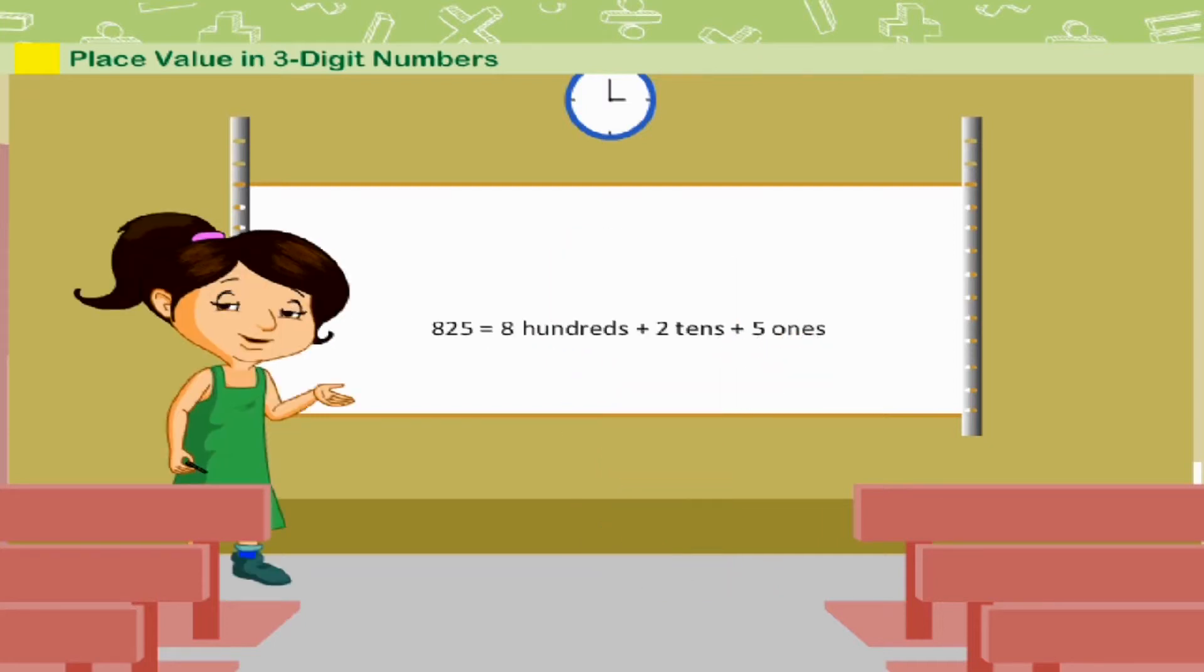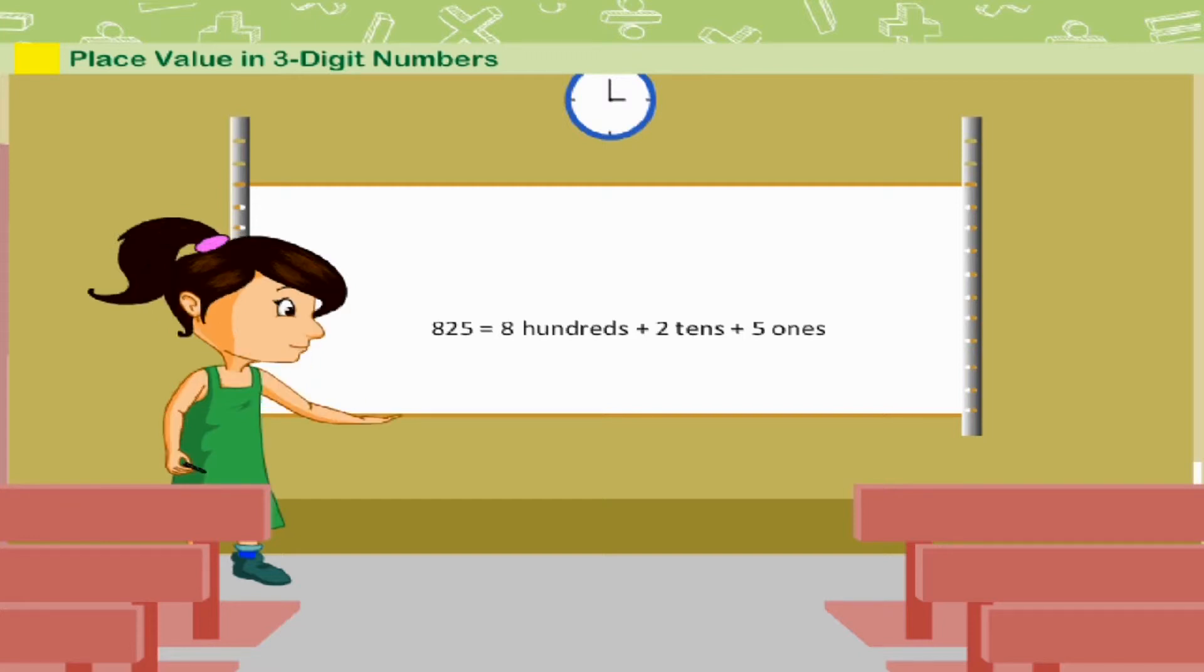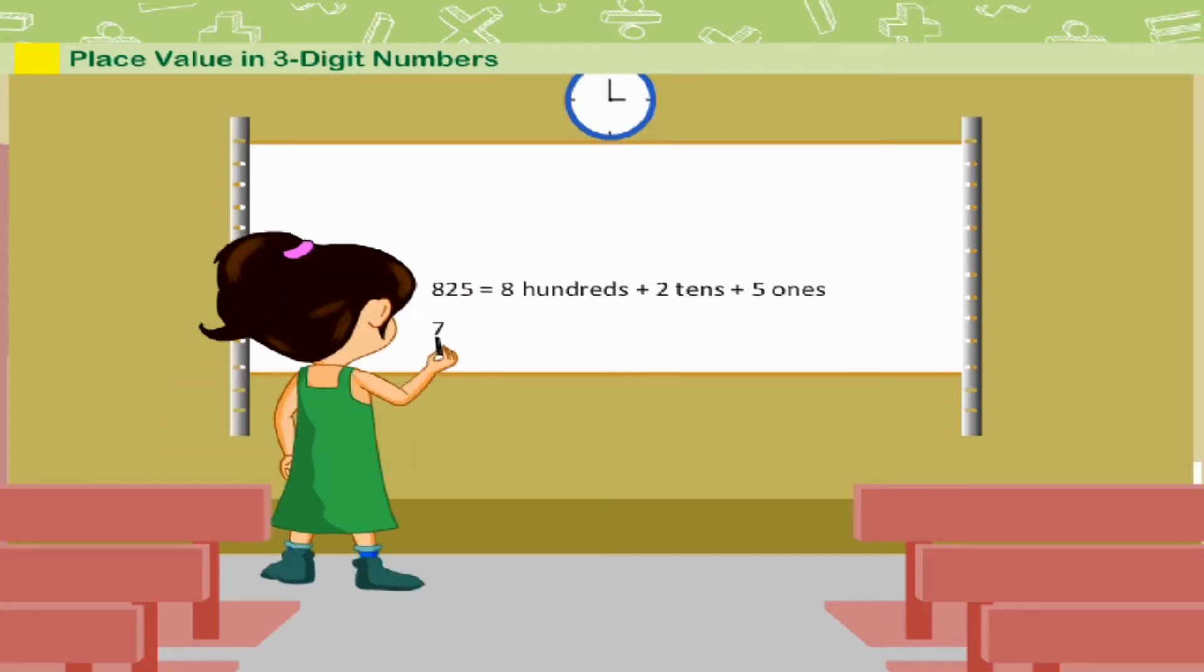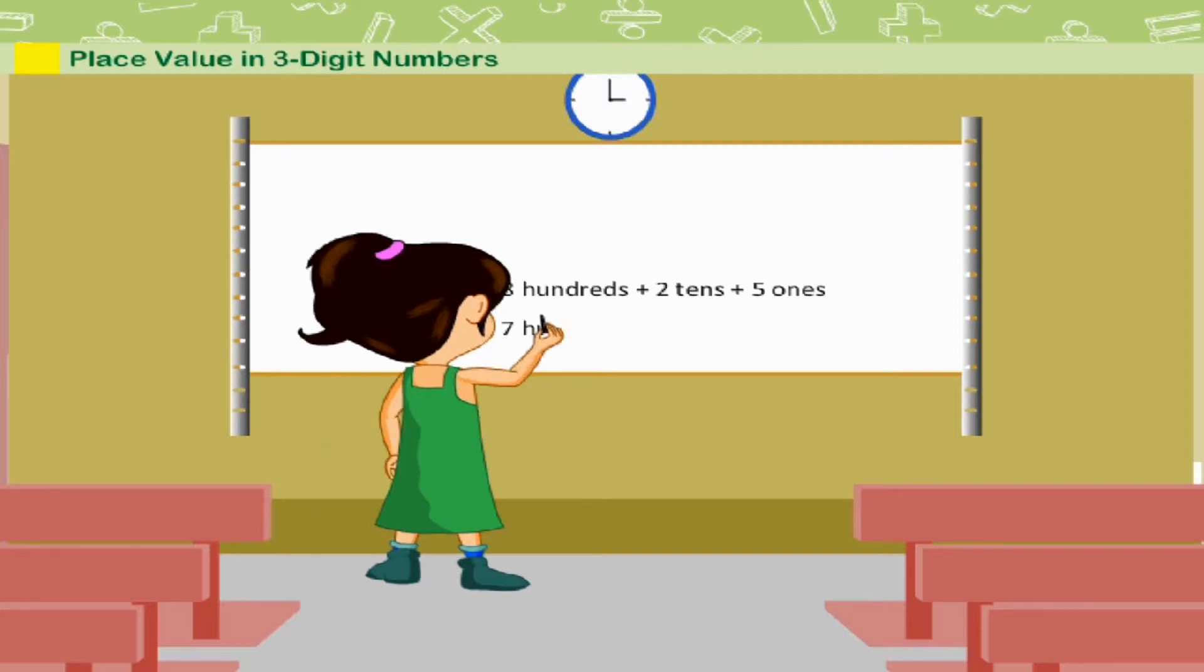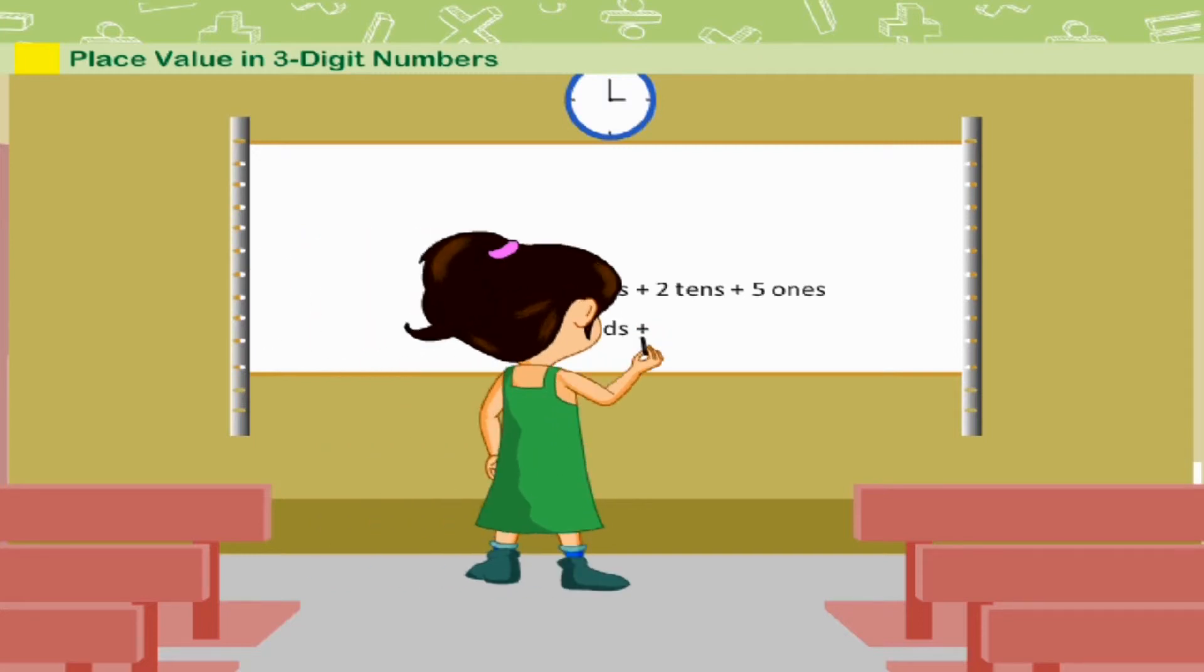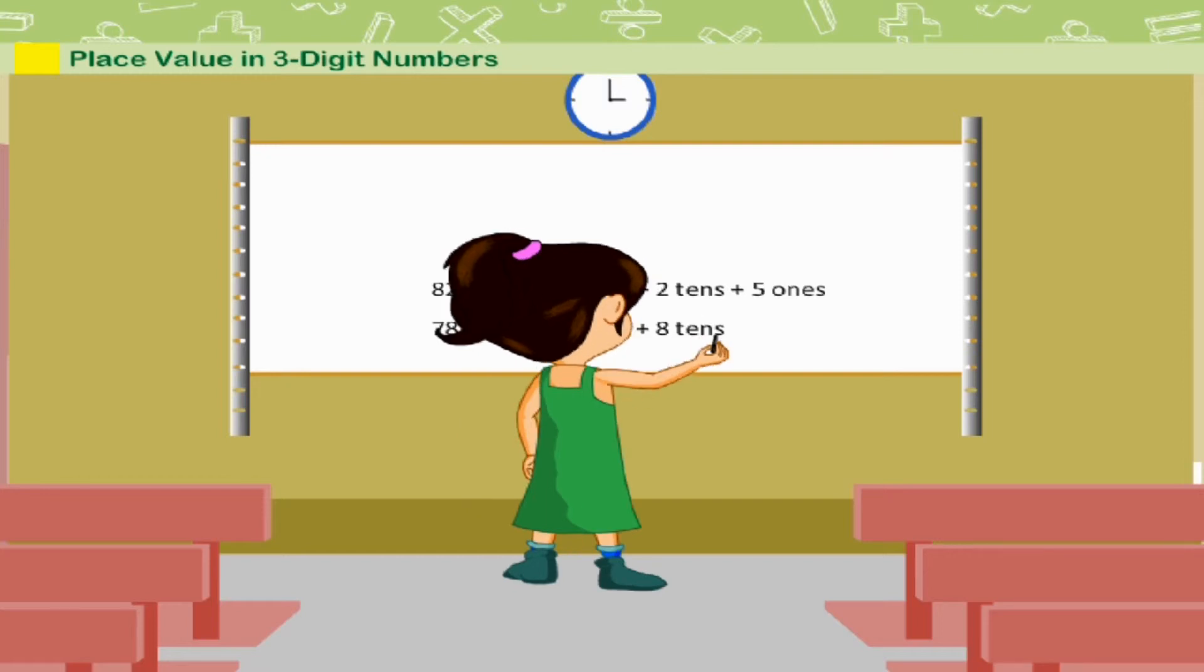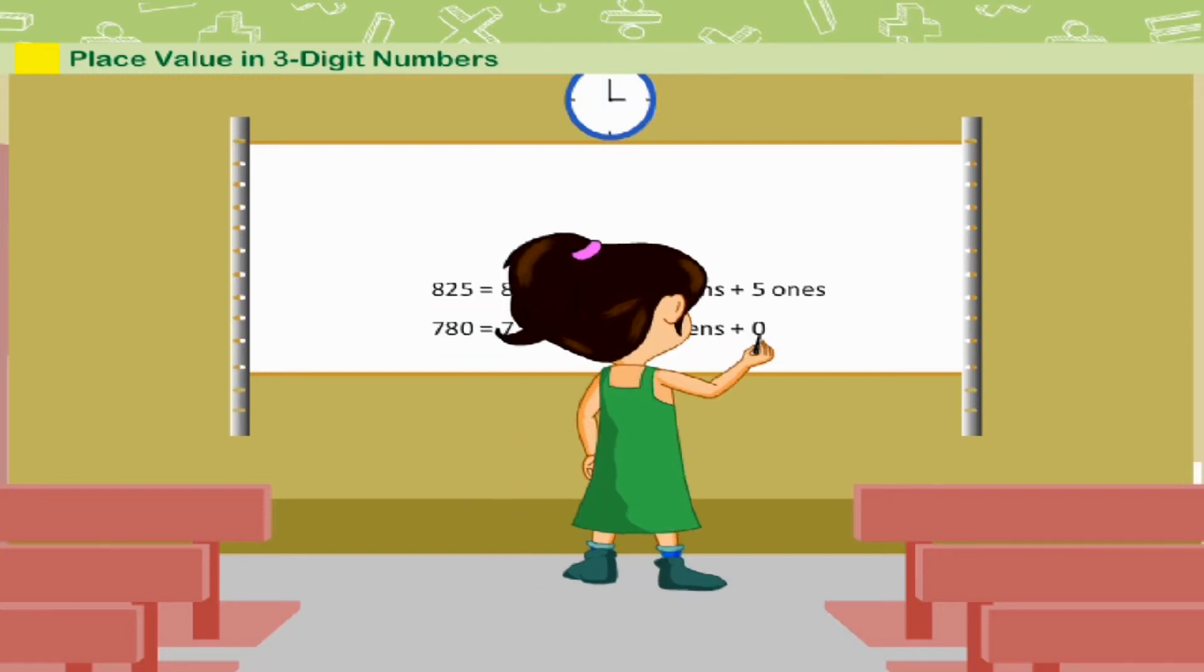Let me see one more example. Seven hundred and eighty is equal to seven hundreds plus eight tens plus zero ones.